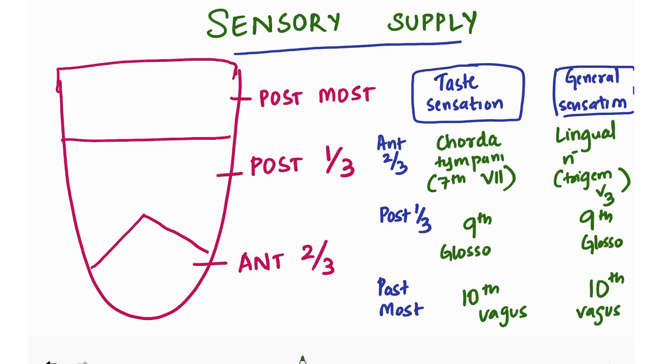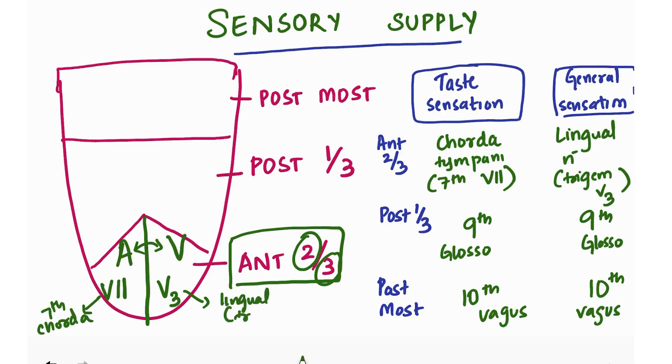Now how can we remember this? For anterior two-third, let's take the A and invert it - we get a V. Write two V's, one for taste and one for general sensation. Take the two from two-third and write two lines beside the first V, and take the three from two-third and write it next to the second V. So we have 7 and V3. 7 represents seventh facial nerve for chorda tympani, and V3 for third branch of trigeminal, the lingual nerve.